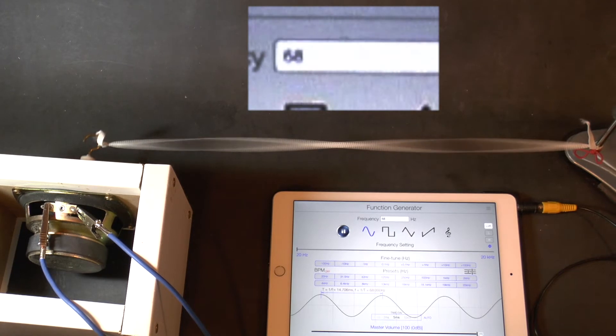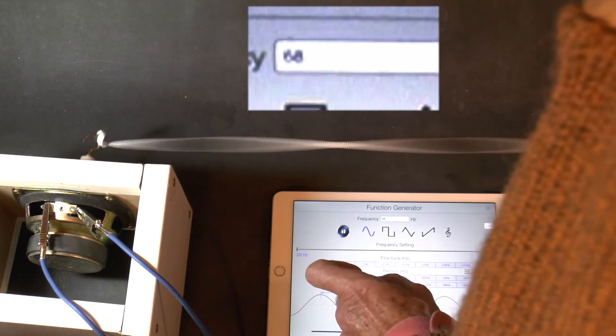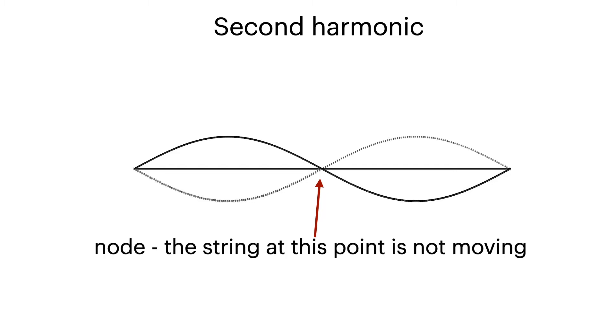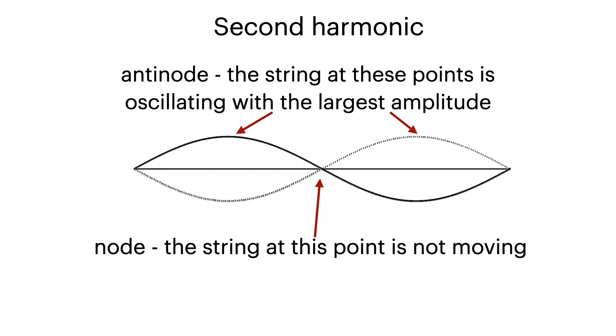The string oscillates more than it did before. Notice that there is a point in the middle where it seems not to be moving. We have two loops in the string. This is called the second harmonic. The point in the middle of the string, which was not vibrating, is called the node. The places where it's vibrating most are called anti-nodes.